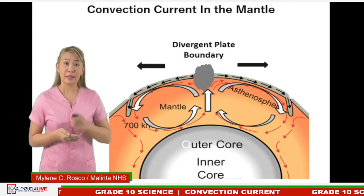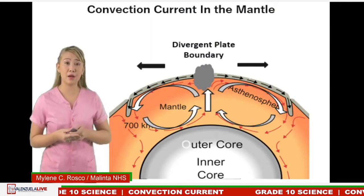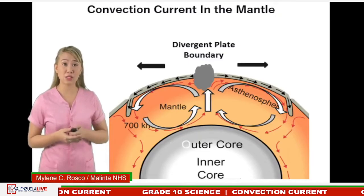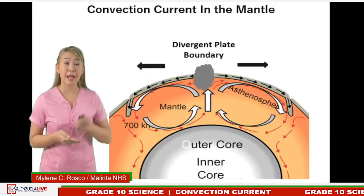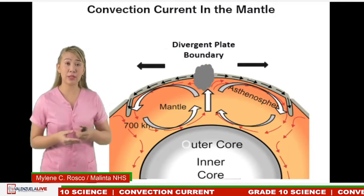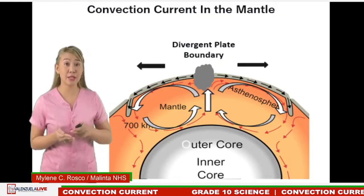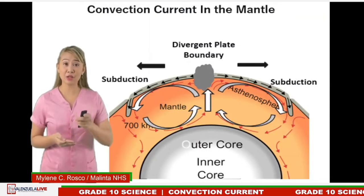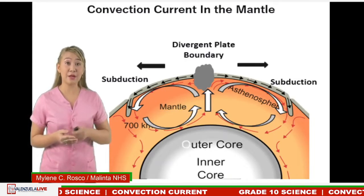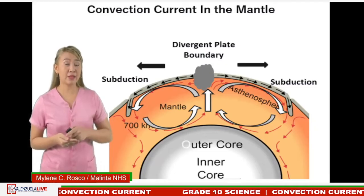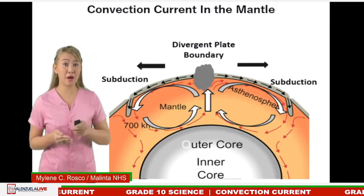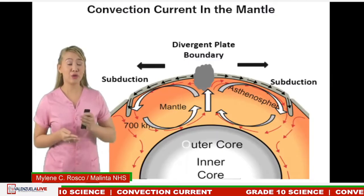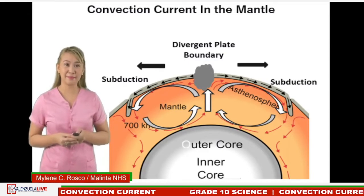As the molten rocks move towards the asthenosphere, they ooze out of the mantle, pull down, and form new lithosphere. The sinking of the denser molten rocks pulls down the lithosphere at the convergent plate boundary, causing the occurrence of the subduction process. Subduction is the sinking of the denser lithosphere towards the mantle.